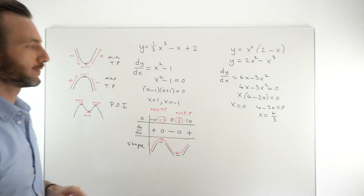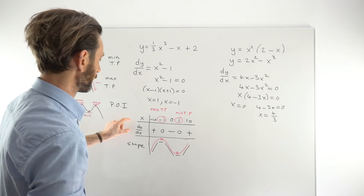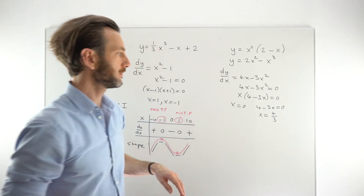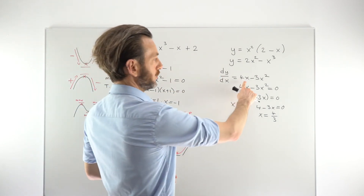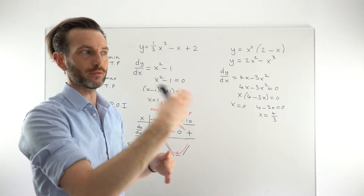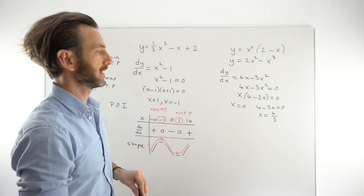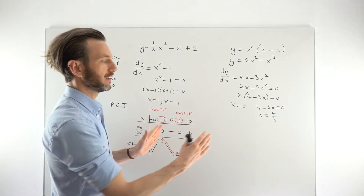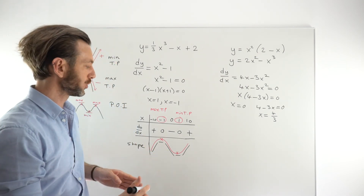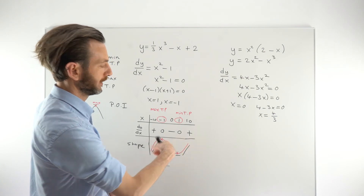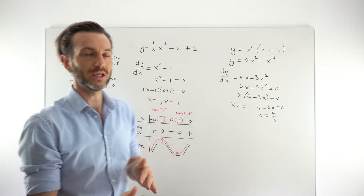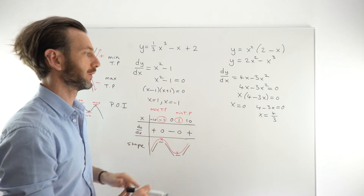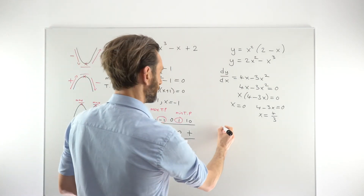Those are our two stationary points. We want to determine their nature using the nature table. Another approach is the second derivative test, where you differentiate again and connect the second derivative to whether the function is a maximum or minimum. However, I find the nature table more effective and less likely to cause confusion, so that's the technique we'll use.